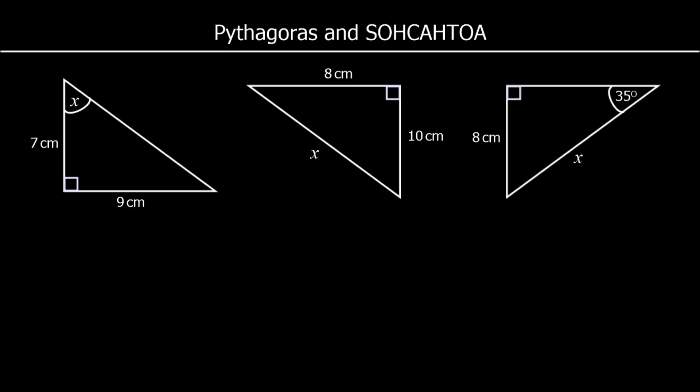We use both Pythagoras and the trigonometric ratios, SOHCAHTOA, to find an unknown length or angle in a right-angled triangle. We've got three different triangles here with three different unknowns. Can you work out which ones are going to be SOHCAHTOA and which one will be Pythagoras?